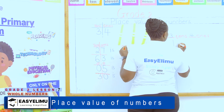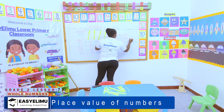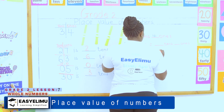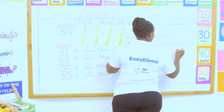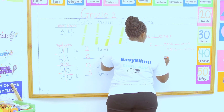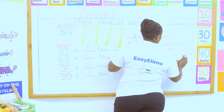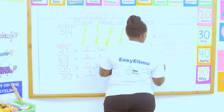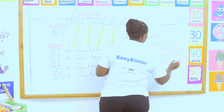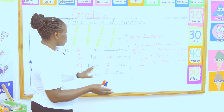During your own free time, here is the work I want you to do: 74 equals dash tens, dash ones. And 82 equals dash tens, dash ones. Also, fill in the number: dash equals eight tens, four ones. I want to see this done when we meet in the next lesson.